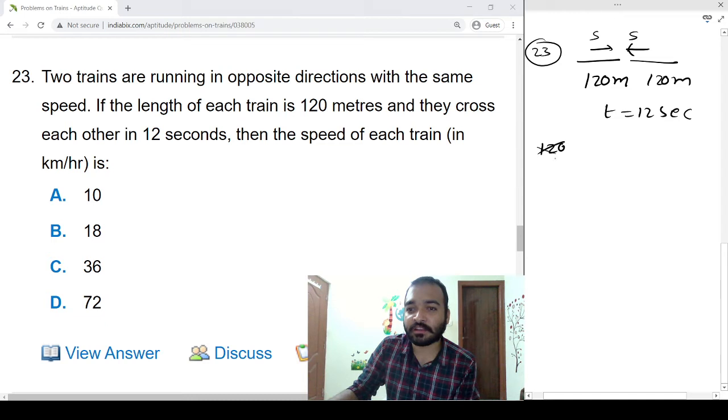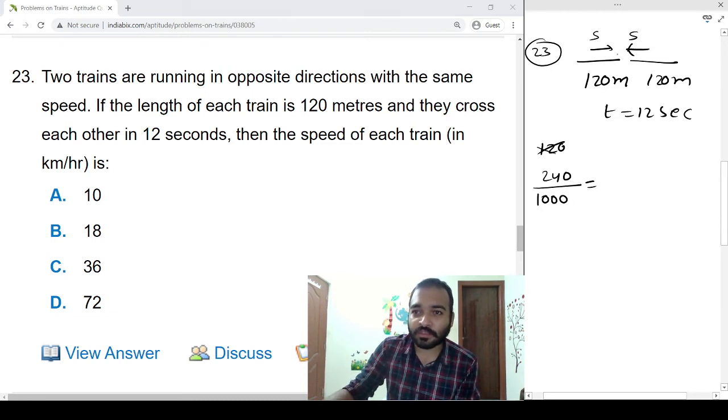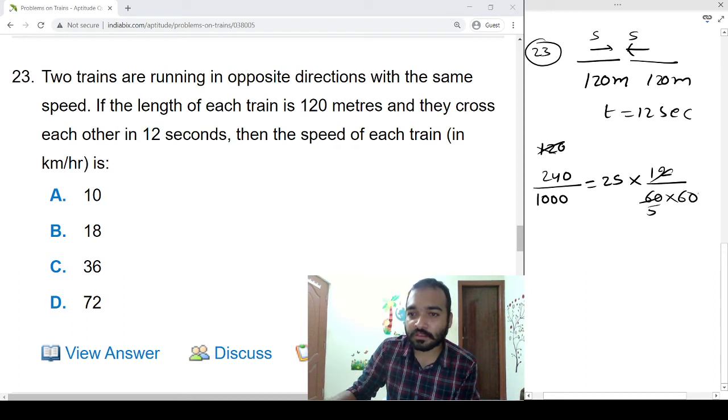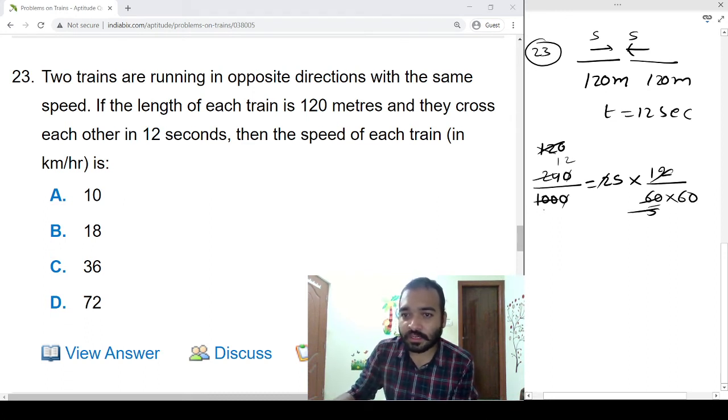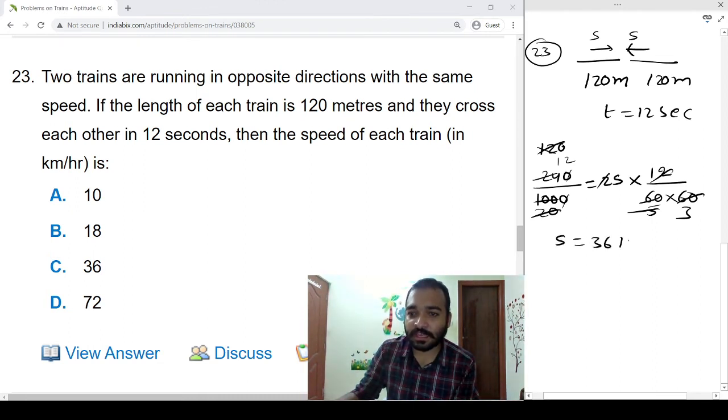Distance is 120 plus 120, that is equal to 240. We want speed in kmph, so we need to convert these meters into kilometers, so by 1000. Speed opposite sides, so 2s into time is 12 seconds. We need to convert into hours, so by 16 to 60. 12 table 5 times, 12 times 5 table 20 times 3 times. S is equal to 12, 3s are 36 kmph.